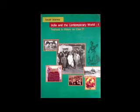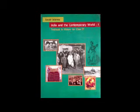The representatives of the third estate viewed themselves as spokesmen for the whole French nation. On 20 June they assembled in the hall of an indoor tennis court in the grounds of Versailles, declared themselves a National Assembly and swore not to disperse till they had drafted a constitution that would limit the powers of the monarch. They were led by Mirabeau — born in a noble family but convinced of the need to do away with feudal privilege — and Abbé Sieyes, originally a priest, who wrote an influential pamphlet called 'What is the Third Estate?'